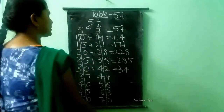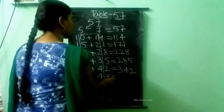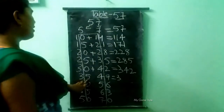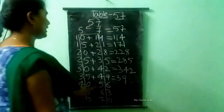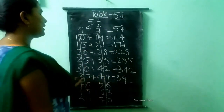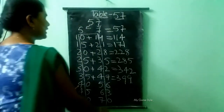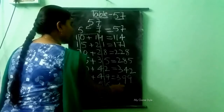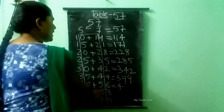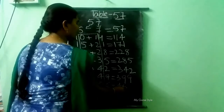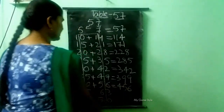Here it is 2, so I am writing 2 as it is. Then here it is 3, so I am writing 3. Next 5 plus 4 — how much, children? 9. Here 9 is there, so I am writing 9 as it is. Then here it is 4, so I am writing 4 as it is. Then we are adding these both numbers: 0 plus 5 — 5. Here it is 6, so I am writing 6 as it is.